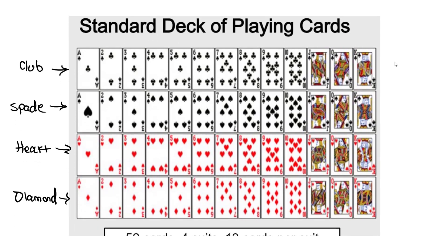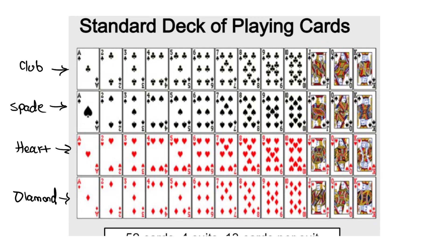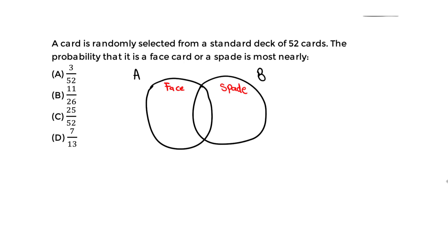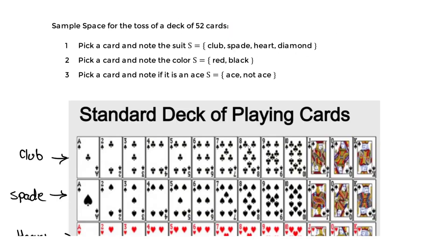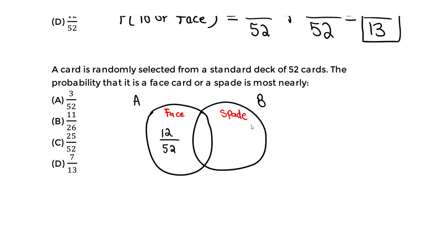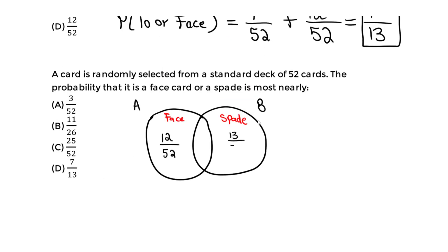Focus on the face cards: how many do we have out of 52? We already found that — it's 12 out of 52. We have 12 face cards out of 52. For the spade, that's the spade row — how many do we have? We have 13 cards in that row. So it's 13 out of 52 for the spade.